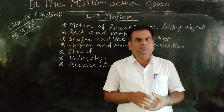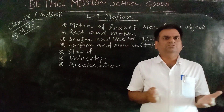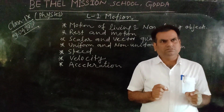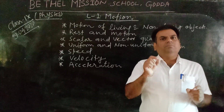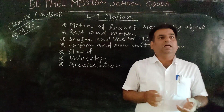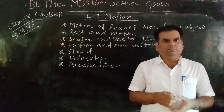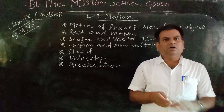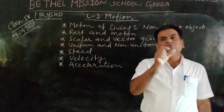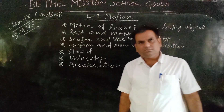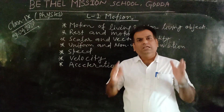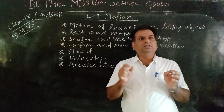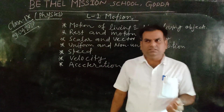Oscillatory motion means when the object oscillates from a rigid point, like the motion of the pendulum. It is oscillatory motion because it oscillates between two extreme points and the object moves between those extreme points.